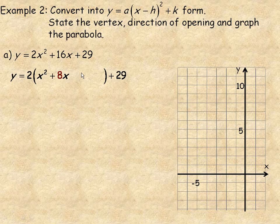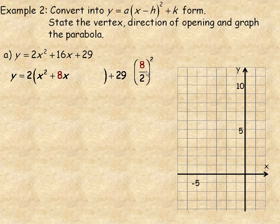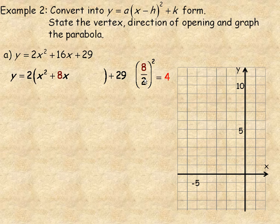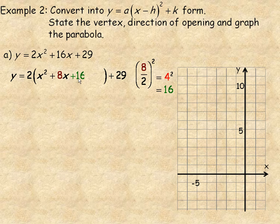The way you find what that number should be is you take the 8 from the 8x, divide it by 2, and square that value. So 8 divided by 2 is 4, and 4² is 16. So I will add 16 and subtract 16 in here.